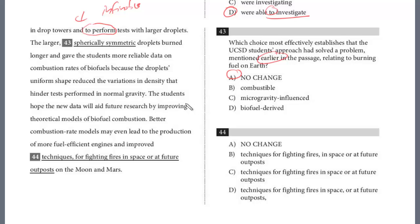And the last question. The students hope the new data will aid future research by improving theoretical models of biofuel combustion. Better combustion rate models may even lead to the production of more fuel-efficient engines and improved techniques for fighting fires in space or at future outposts on the moon and Mars. And so this last clause here, improved techniques, and then we're describing the techniques for fighting fires in space or at future outposts. Now, if you were going to put a comma, you have to ask yourself, is this not essential? Or does it change the meaning?